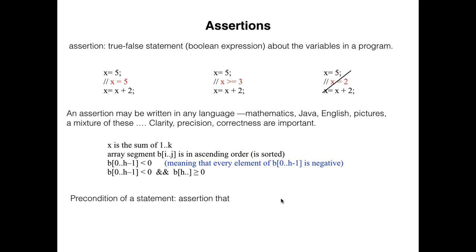The precondition of a statement is the assertion that precedes it. The postcondition of a statement is the assertion that follows it. In this sequence, statement x becomes 5 has no precondition, but it has postcondition x equal 5. The next statement, x becomes x plus 2, has precondition x equal 5, but it has no postcondition.